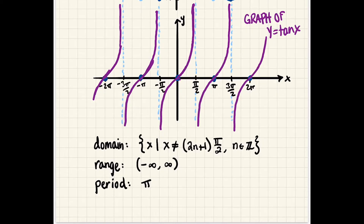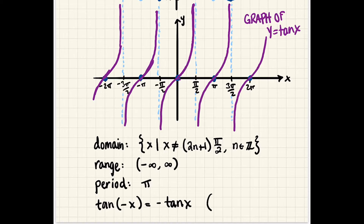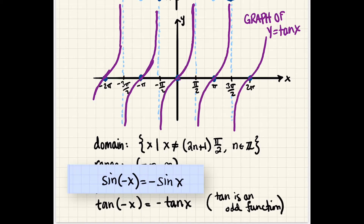Notice that π is half as long as the period for sine and cosine, which are each 2π. Tangent has the same kind of symmetry that sine does — it goes through the origin, giving us the identity tangent of negative x equals negative tangent of x. So tangent is an odd function, much like sine.